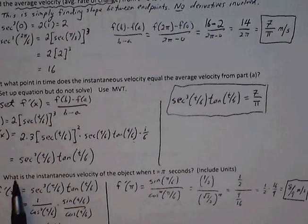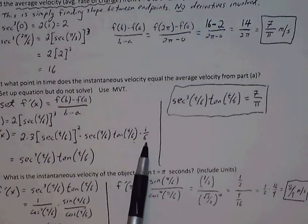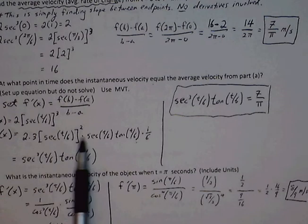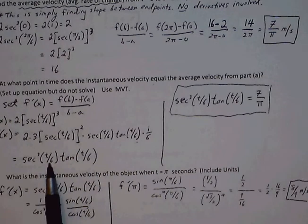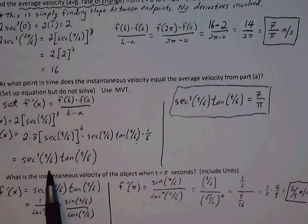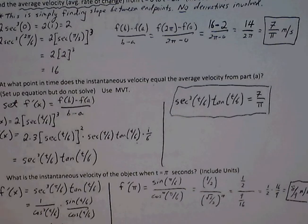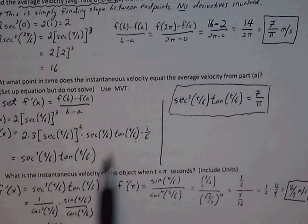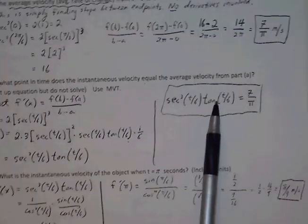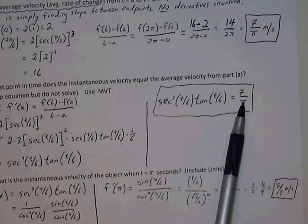If we clean this up, the 6 and the 1 over 6 will cancel out. Secant squared and secant will combine to be secant cubed. So secant cubed tangent t over 6, and we set our instantaneous velocity equal to our average slope. And that's our answer.